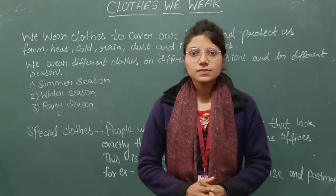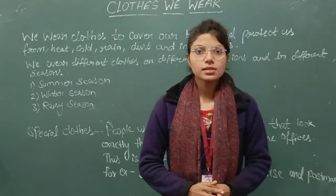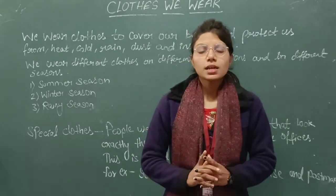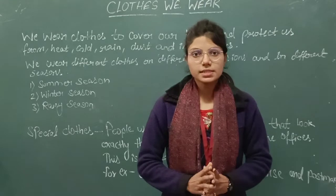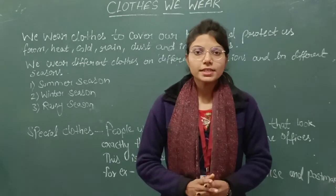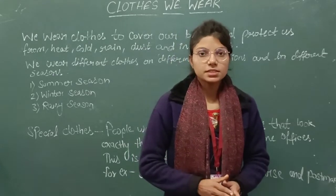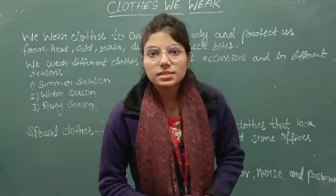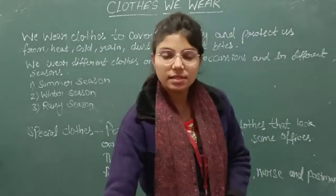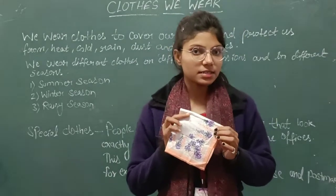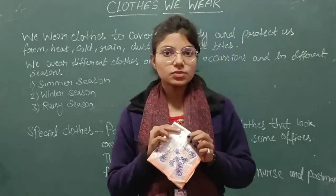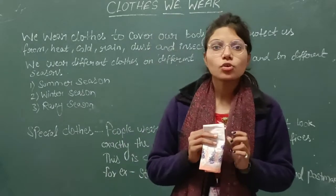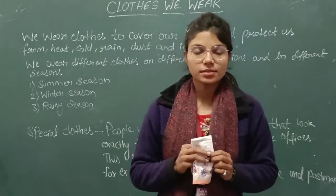Let's look at clothes we wear in summer season. It is very hot in summer, so we wear light colored cotton clothes in summer. Cotton clothes like shirt, top, skirt, and shorts — these are all examples of cotton clothes. And look at this, this is a hanging and it is made from cotton, so it is also an example of cotton clothes. Cotton clothes keep us cool.